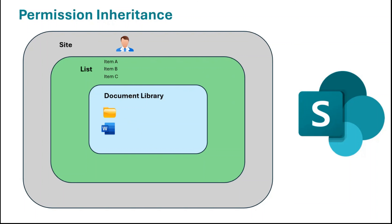That means if a user is part of the site owners group, that user will have owner permission on the SharePoint site, on the list, on the list items, on the document library, and on the files and folders within the document library. Similarly, if a user is part of the site members group, he will have edit permission on the site, on the list, on the items, and on the document library. This is called permission inheritance.